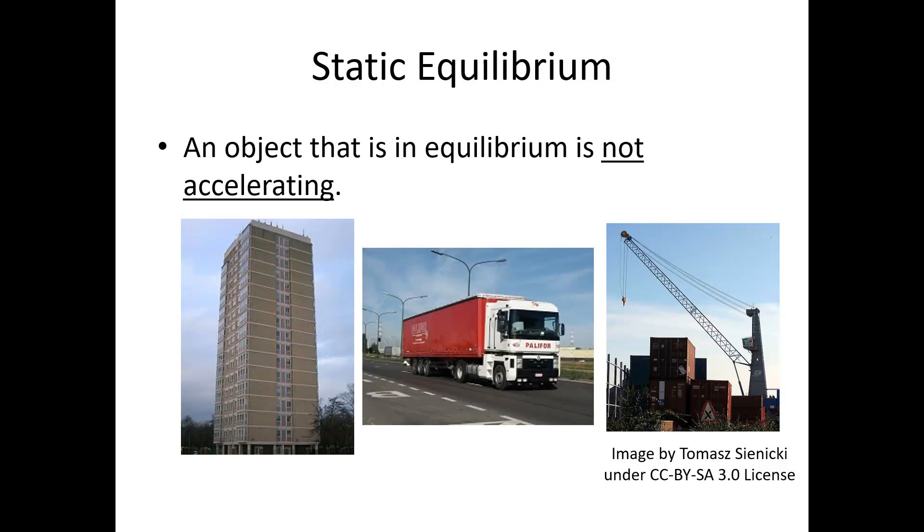And then finally, if we have something that is maintaining a constant velocity, this truck for example, say it is maintaining a constant speed and constant direction in its travel. So if it is maintaining a constant velocity, it has zero acceleration. This truck is not in static equilibrium because it's moving, but it is in equilibrium and we could apply our equilibrium equations like we would for the building or for the crane.